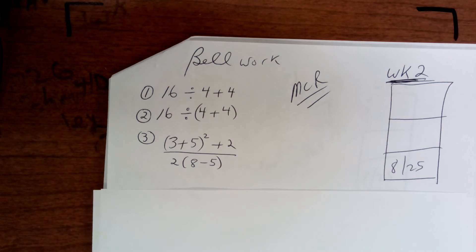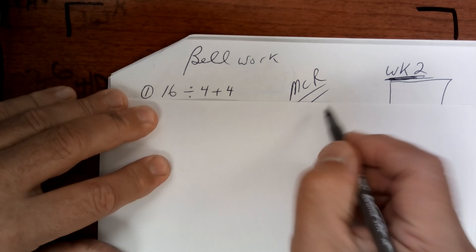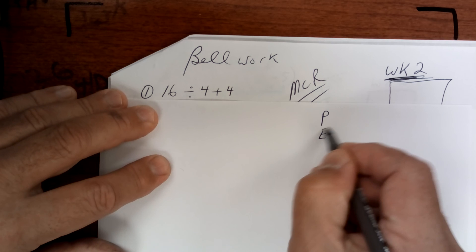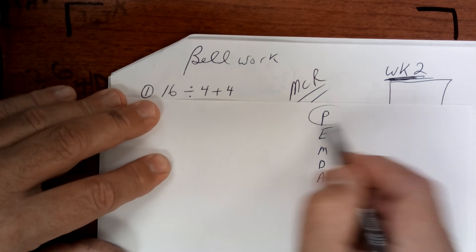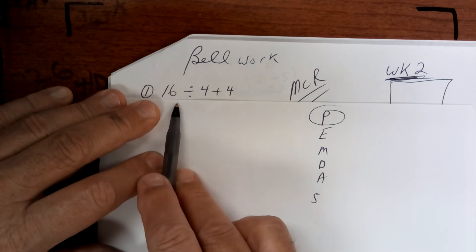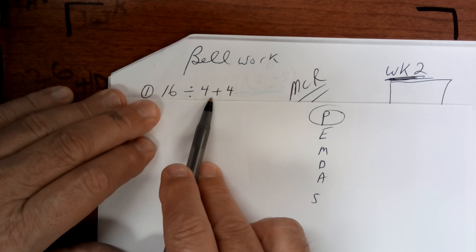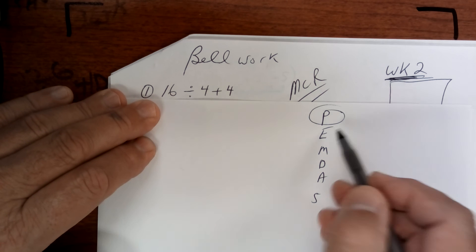Let's take a look at these order of operations. Say 'Please Excuse My Dear Aunt Sally.' Write that down. Parentheses come first. Well, there are no parentheses. The next thing is exponents. There are no exponents.